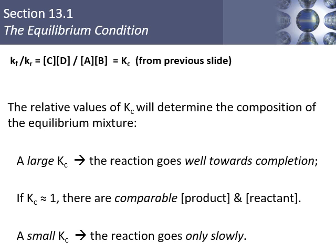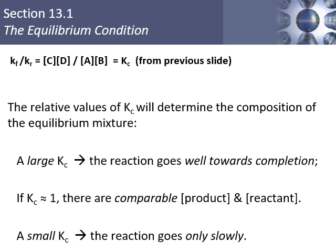If this constant is large, that means there's more products than reactants at equilibrium — the equilibrium shifted mostly to the right, meaning it went mostly to products. On the other hand, if K is small, it means the reaction doesn't go very far to the right — it remains mostly on the reactant side and just a little bit of it reacts.